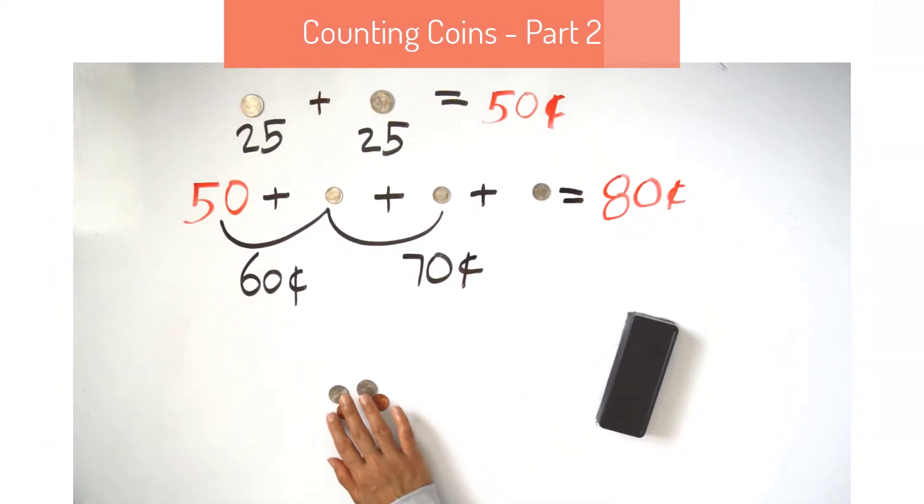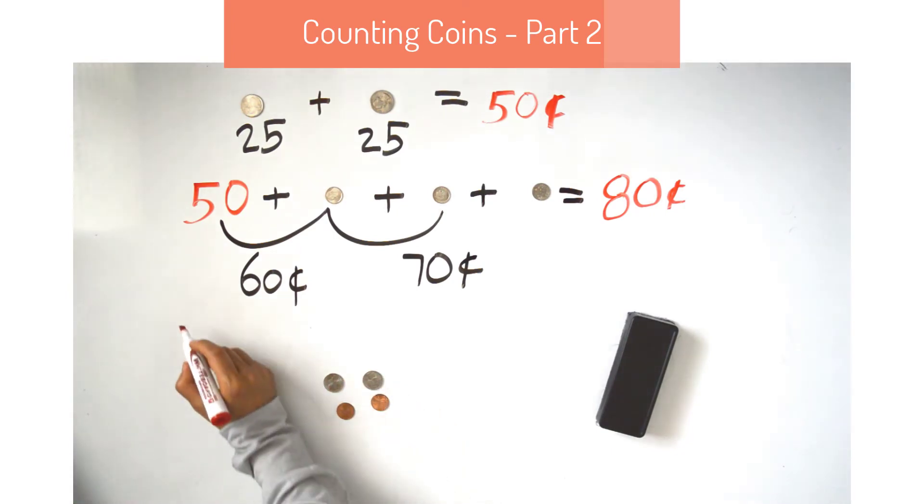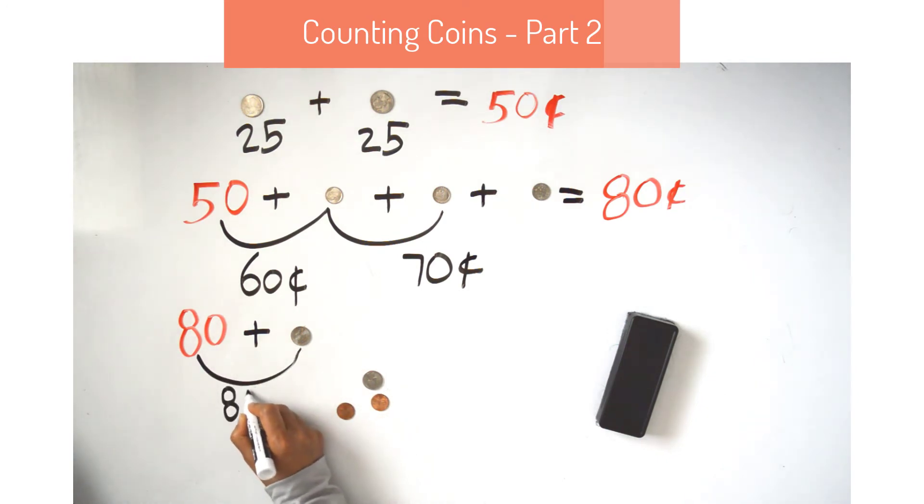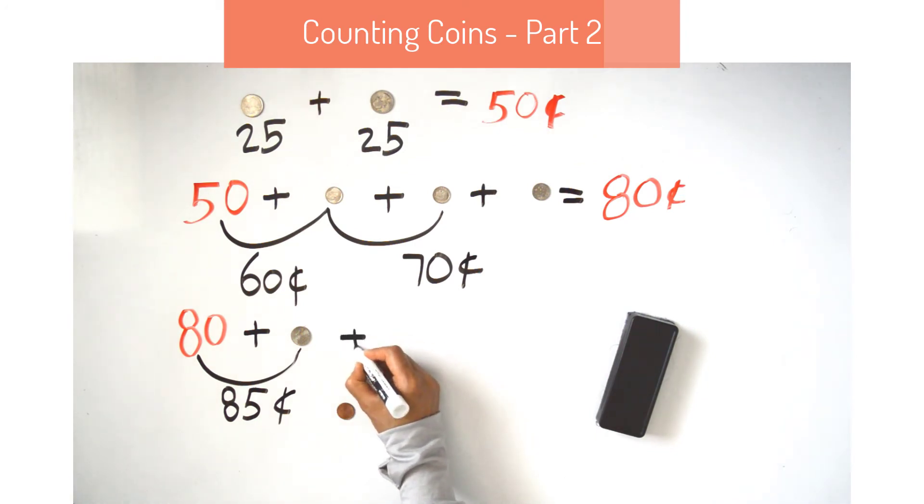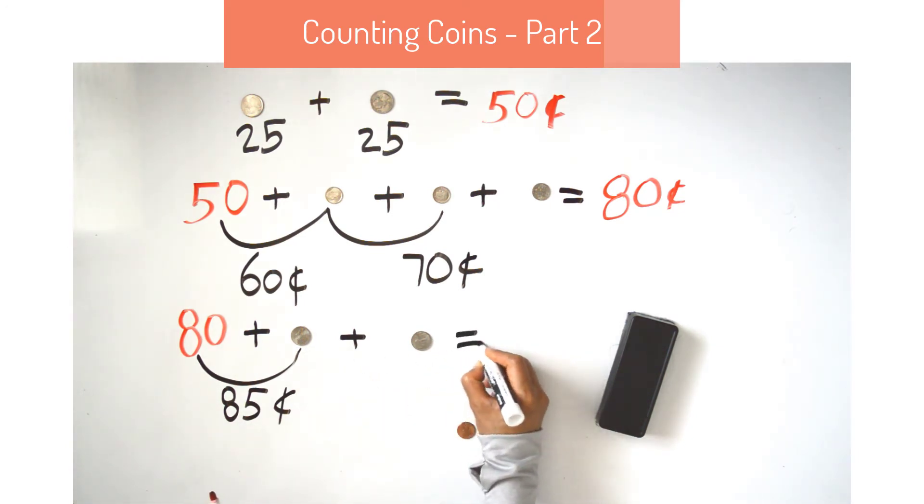Now we will add nickels. Each nickel is worth 5 cents. 80 plus 5 more equals 85 cents. 85 plus 5 more equals 90 cents.